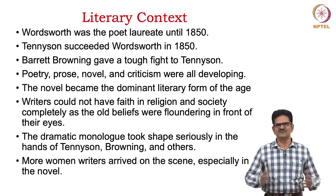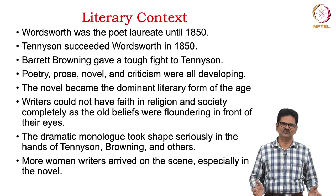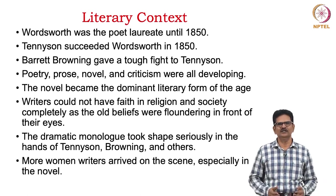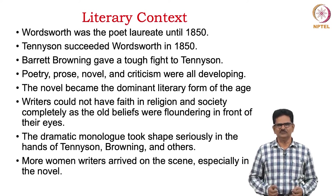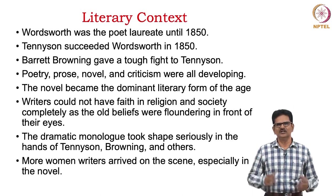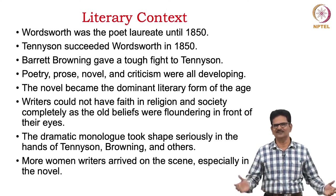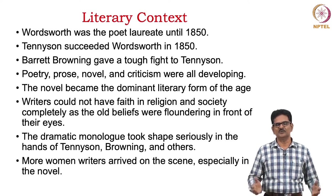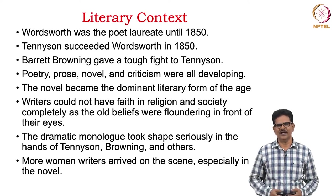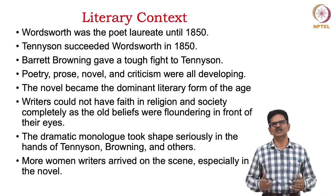Writers could not have faith in religion and society completely because the old beliefs were floundering before their own eyes. The most important poetic form that became very popular in this period is the dramatic monologue, which took shape seriously in the hands of Tennyson, Browning, and other poets. More women writers arrived on the scene, especially in the novel form, and contributed to the development of Victorian literature in general, particularly poetry.